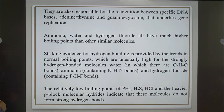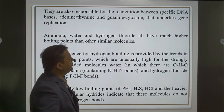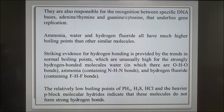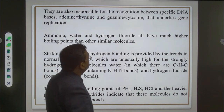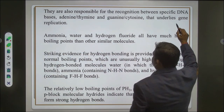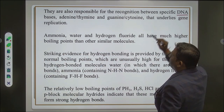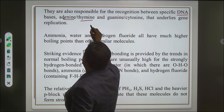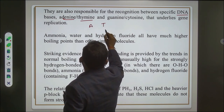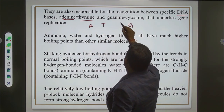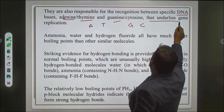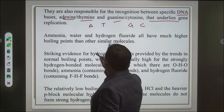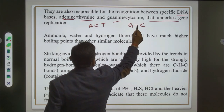Hydrogen bonds are also responsible for recognition between specific DNA bases: adenine–thymine (A–T) and guanine–cytosine (G–C), which underlie DNA gene replication. A–T forms a double hydrogen bond and G–C forms a triple hydrogen bond.